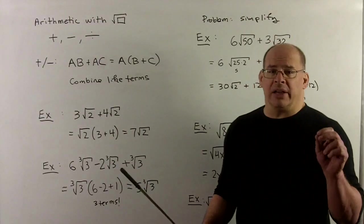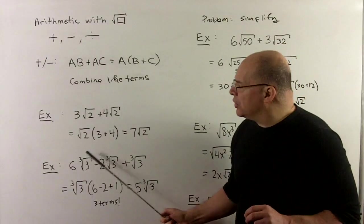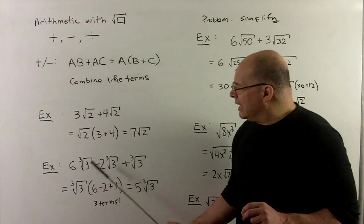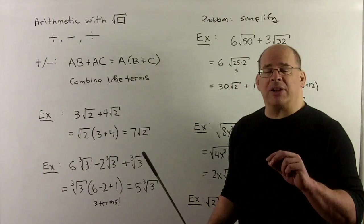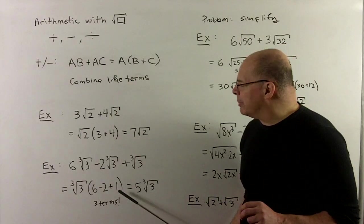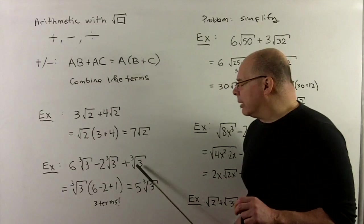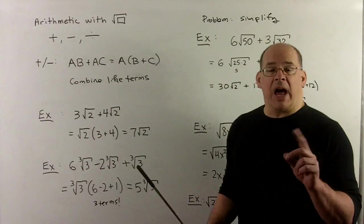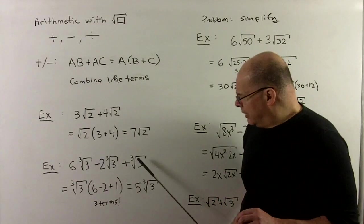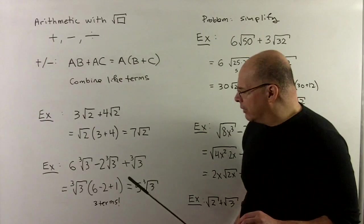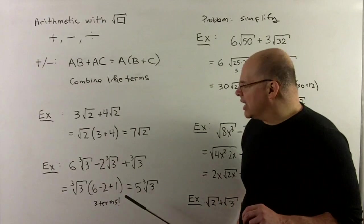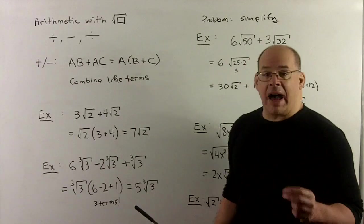For a common error, let's take a look at the next example. If I have 6∛3 minus 2∛3 plus ∛3, here I've got 3 terms. So when I factor out the ∛3, I better have 3 terms in the parentheses. And the common error is going to be to drop the 1 here. So there's no 1 here, but when we factor it out, I've got to get a 1. If you're not sure, just check your work by distributing. And if you drop the 1, you won't get this ∛3 back. So we need to be careful with that. We simplify, so I add all this up, and then that's going to just give us 5∛3.